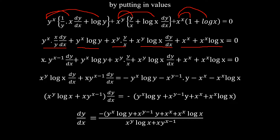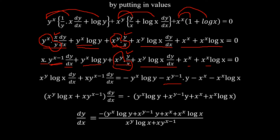Simplifying: y^x divided by y gives y^(x−1), so the first term becomes x·y^(x−1)·(dy/dx). Similarly, x^y divided by x gives x^(y−1), so we have x^(y−1)·y. The full expanded equation is: x·y^(x−1)·(dy/dx) + y^x·log(y) + x^(y−1)·y + x^y·log(x)·(dy/dx) + x^x + x^x·log(x) = 0.